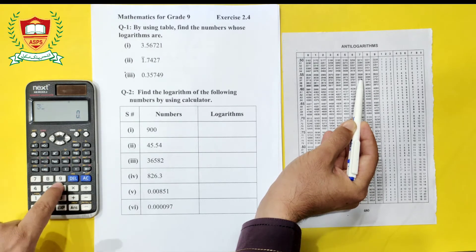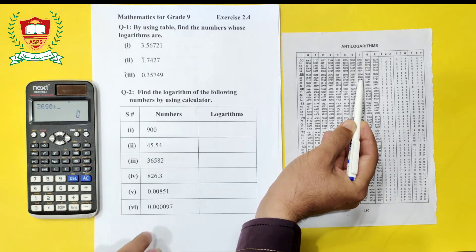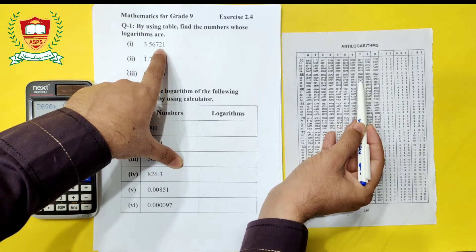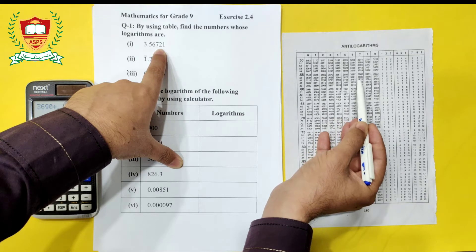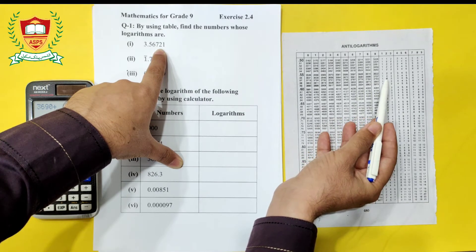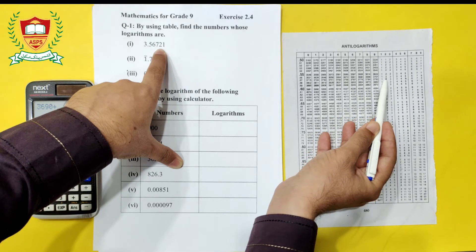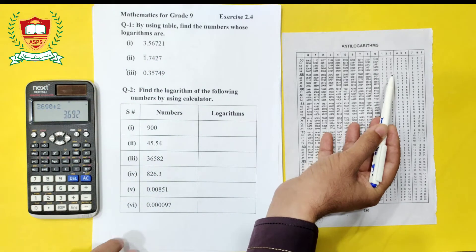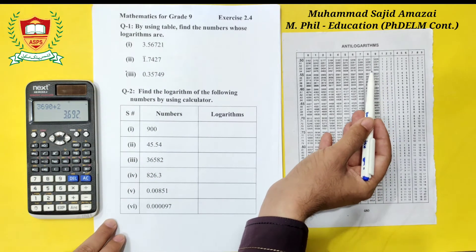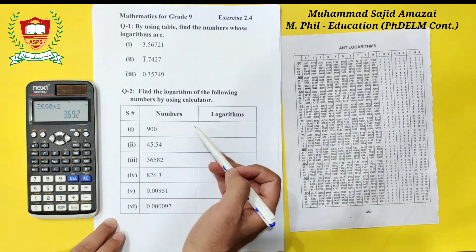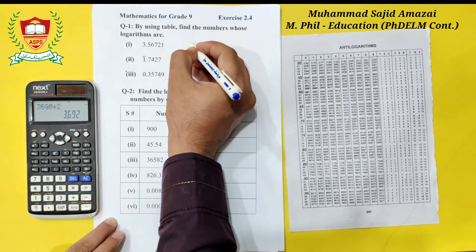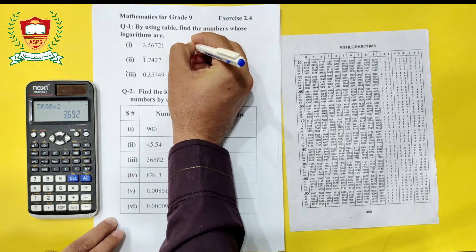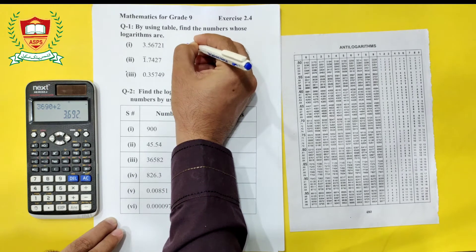We note down 3690. Now we add the mean difference. Moving along the same row to the mean difference section for the fourth digit (which is 2), we get a value of 2. Adding 2 to 3690 gives us 3692.